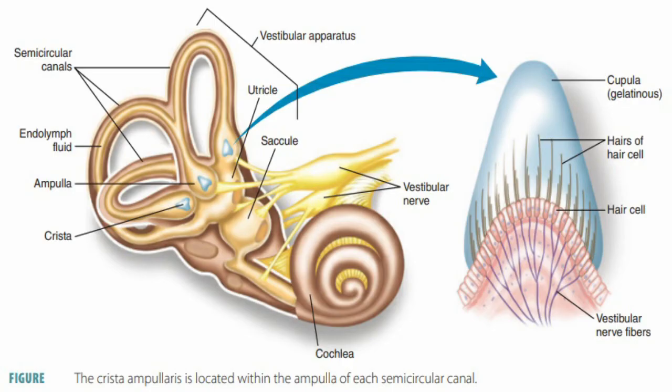The semicircular canals, also known as the labyrinthine, are lined up at right angles — 90 degrees to each other — and allow the brain to know in which direction the head is moving. They are filled with fluid and have small calcium crystals embedded in the lining. The balance system works by sending continuous electrical impulses to the brain. Moving the head causes the fluid in the semicircular canals to shift, which in turn changes the electrical impulses to the brain, allowing it to make any adjustments the body needs for balance.